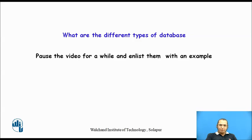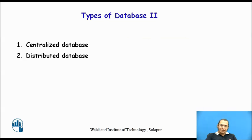Please pause the video and answer the question: what are the different types of databases? Thank you. Now you have already answered that there are four types of databases. Another way to classify the database is depending upon where the database is located, and there are two types: the centralized database and the distributed database.